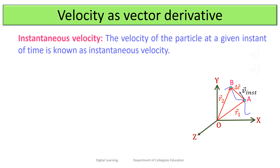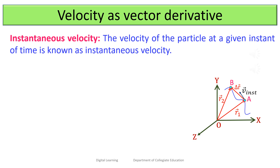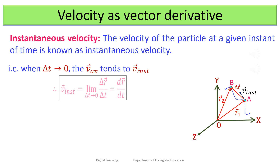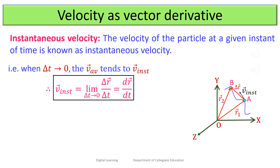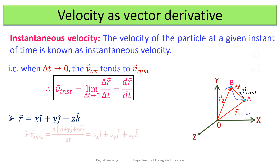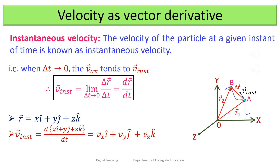The velocity of the particle at a given instant is known as instantaneous velocity. When Δt tends to 0, the average velocity tends to the instantaneous velocity. Therefore, instantaneous velocity = lim(Δt→0) Δr⃗/Δt = dr⃗/dt. Expressing the position vector in Cartesian coordinates as r⃗ = x î + y ĵ + z k̂, the instantaneous velocity becomes v⃗ = vₓ î + v_y ĵ + v_z k̂, where vₓ = dx/dt, v_y = dy/dt, and v_z = dz/dt.